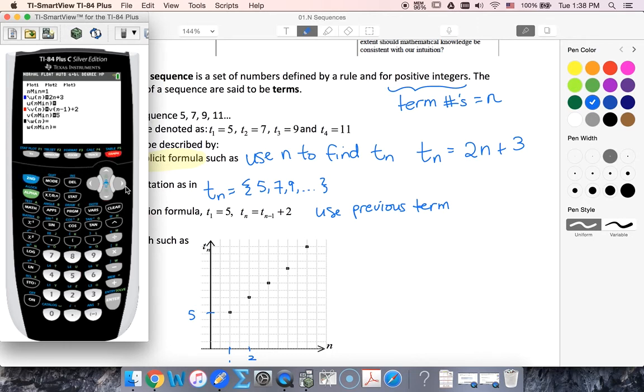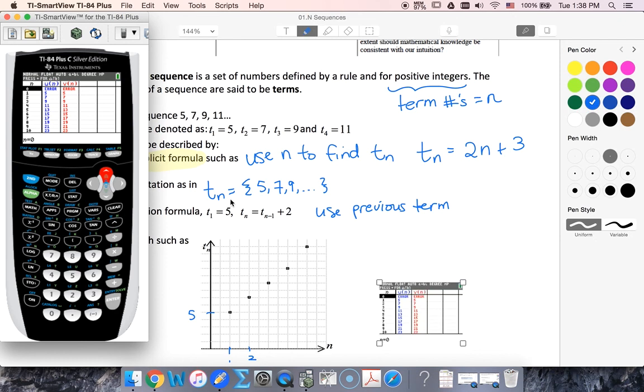And now I can go into my table. And hopefully I'm going to get my 5, 7, 9, 11. We need to start at 1. So let's take my table start to 1. Okay. 5, 7, 9, 11. Notice that I'm undefined for 0.